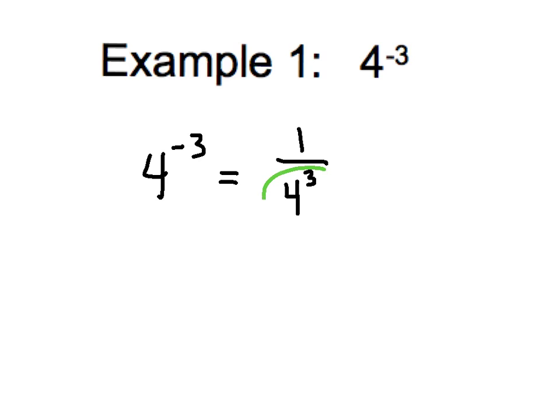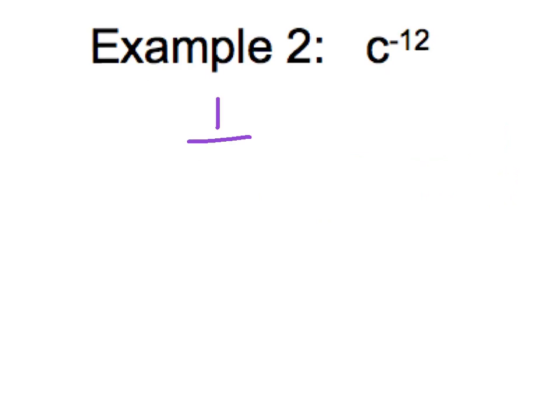If our exponent is applied to a number, we can always evaluate that. That gives me 1 over 4 times 4 times 4, which is 1 over 64. Example 2 for your notes: c to the negative 12 power. This is an easy one following the same pattern — 1 over c to the positive 12 power. Done.